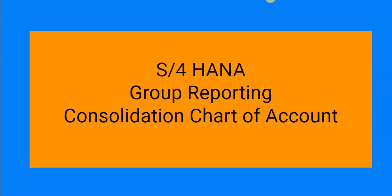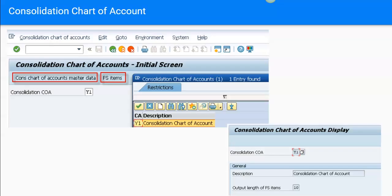The consolidation chart of accounts is another version of the chart of accounts used for consolidation — similar to the operational chart of accounts and the group chart of accounts. SAP has provided one chart of accounts called Y1, and SAP suggests to use it or adopt it. Adopting means we can create our own consolidation chart of accounts by copying from Y1.